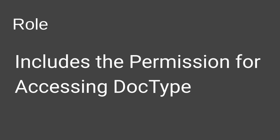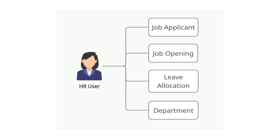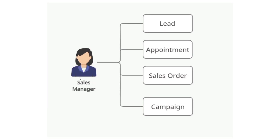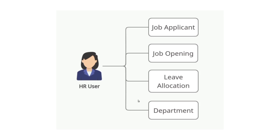ERPNext has various roles such as Sales Manager and HR User. Each role has a different set of permissions for various doctypes. For example, a Sales Manager has access to the Lead doctype, Appointment, Sales Order, Campaign, and more related doctypes. Similarly, an HR User has access to Job Applicant, Job Opening, Leave Allocation, and Department doctypes.